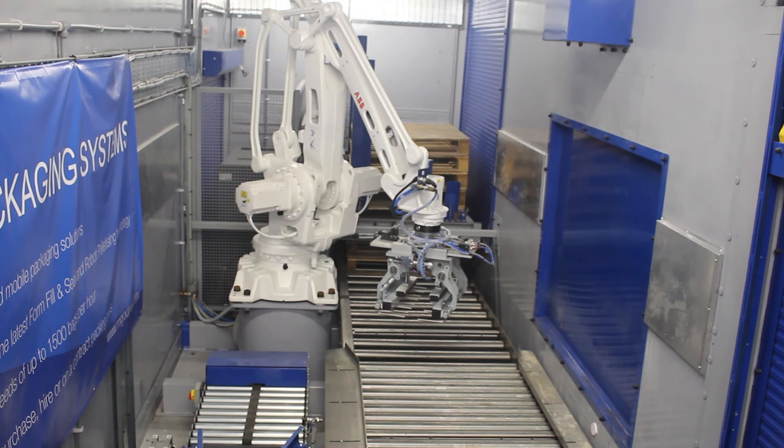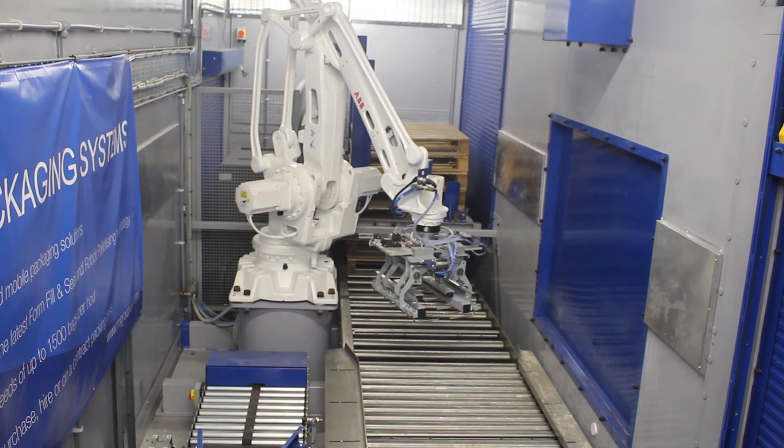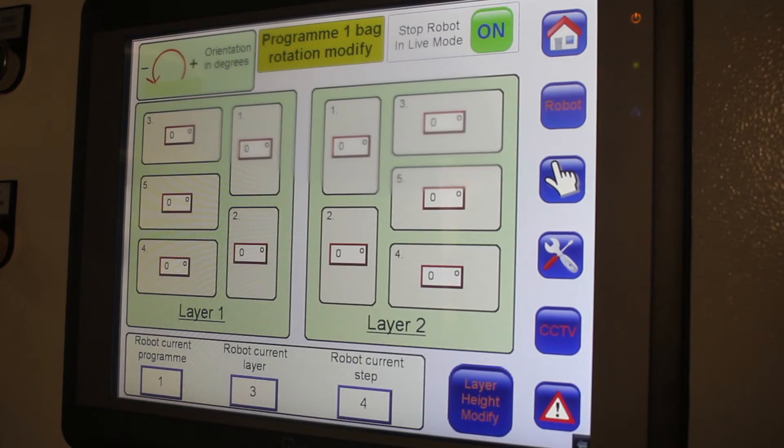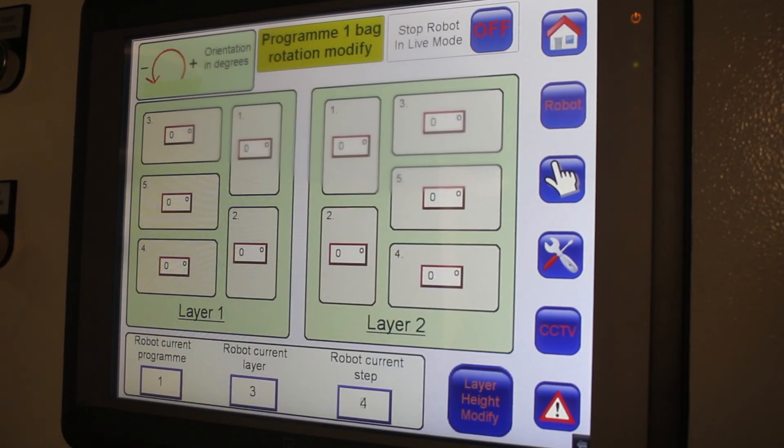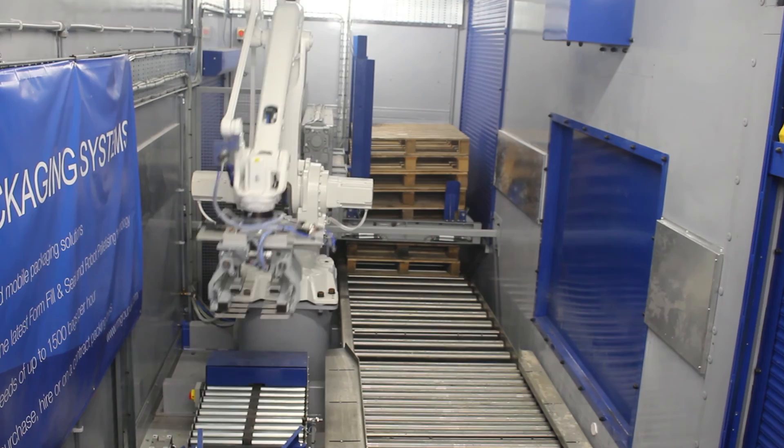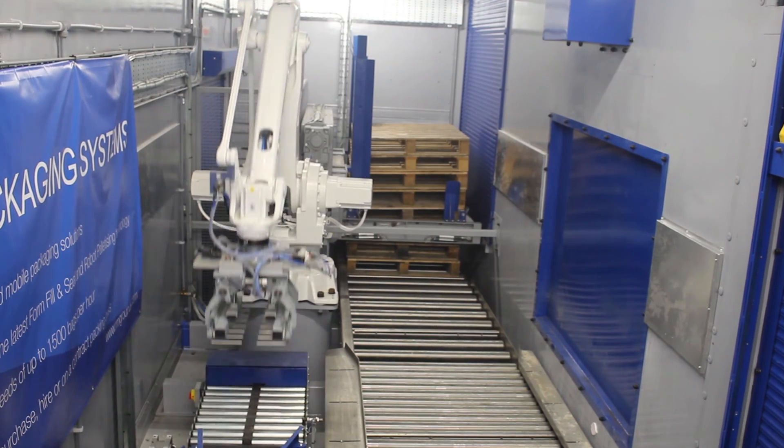Once you've finished and you're happy with that position and you want to drop the bag, what you do is you turn the light mode off. The robot then will drop the bag and it will carry on with the sequence until you need to modify your next bag.